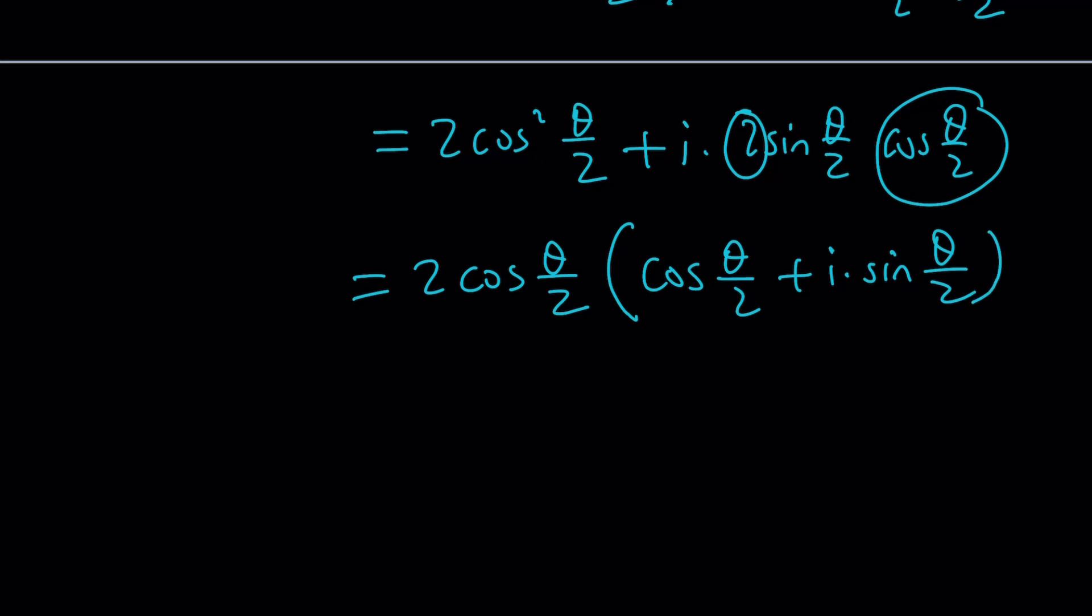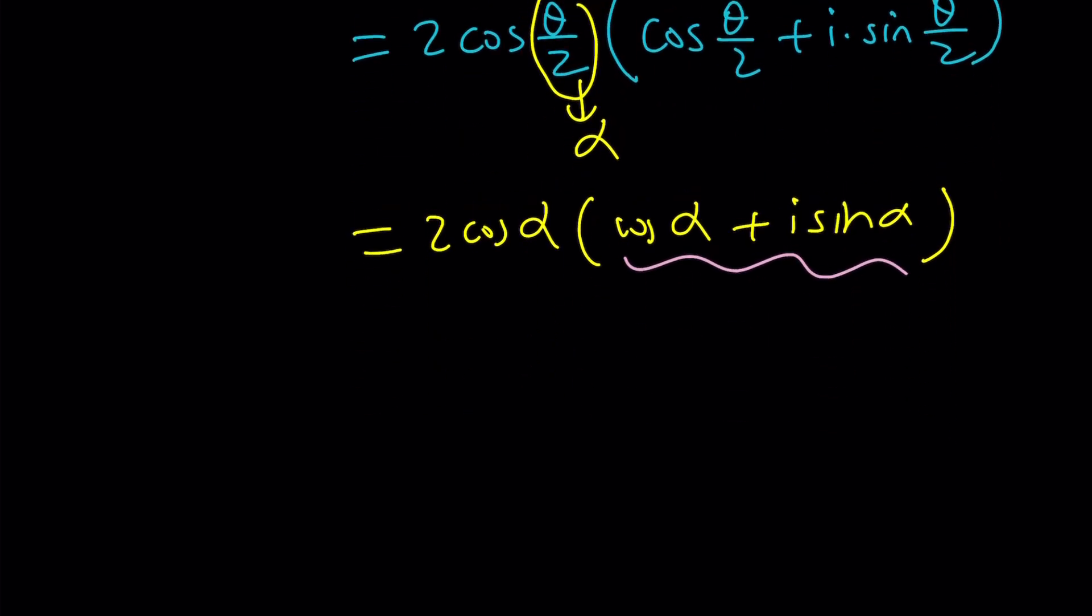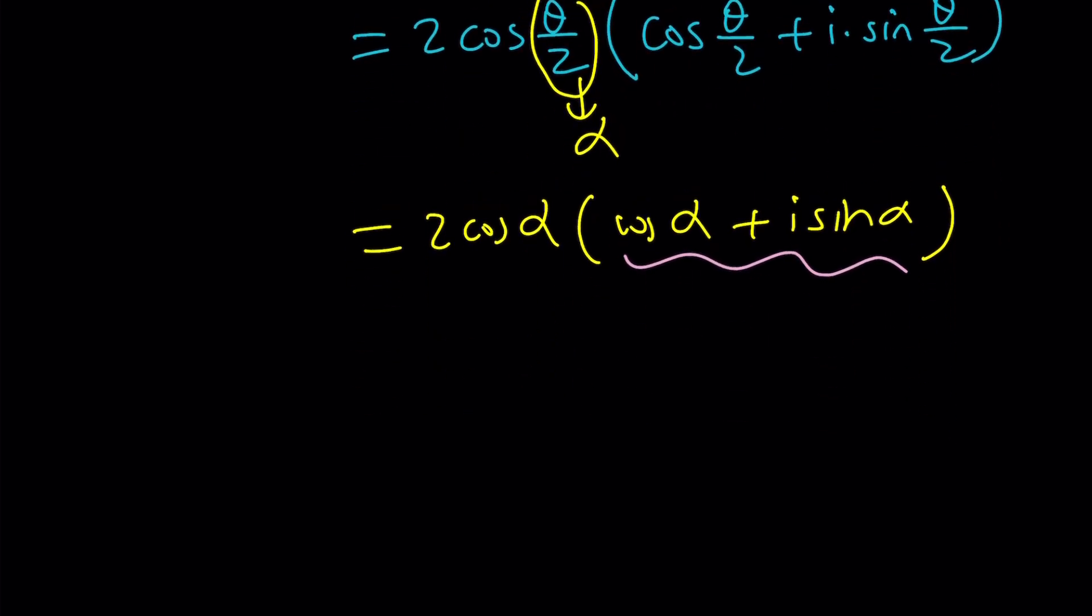And if you call the theta over two alpha, something else, right? What is this going to look like? This is going to look like two cosine alpha times cosine alpha plus i sine alpha. Again, I got a complex number whose modulus is one, right? This is cosine squared plus sine squared is one. So here's what happens. This becomes the r. This becomes the e to the i alpha. We have r e to the i alpha. So r is the modulus, which is two cosine alpha.